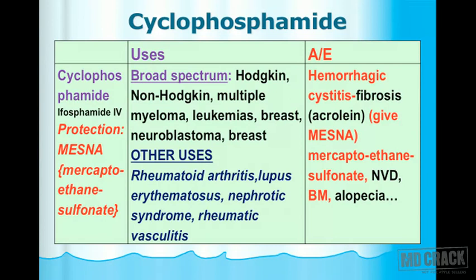Other uses of cyclophosphamide are equally important. It can be used in the management of rheumatoid arthritis and lupus erythematosus as a cytotoxic agent, and also in nephrotic syndrome and rheumatic vasculitis. Adverse effects include hemorrhagic cystitis — very characteristic of cyclophosphamide — and fibrosis.